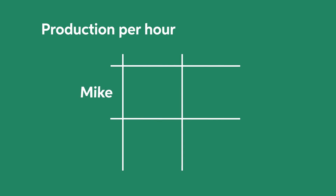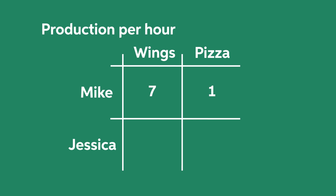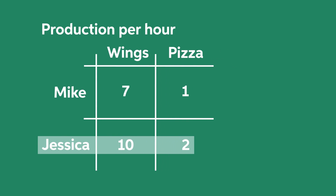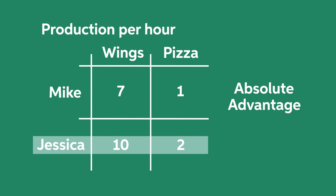Let's go through a simple example to better understand these concepts. This table shows the production capabilities of Mike and Jessica per labor hour. For example, Mike is able to produce seven wings or one pizza in an hour. Jessica, on the other hand, can produce ten wings or two pizzas in an hour. We say Jessica has an absolute advantage in the production of both wings and pizza because ten is greater than seven and two is greater than one. Recall that for absolute advantage, we are only comparing the capabilities.